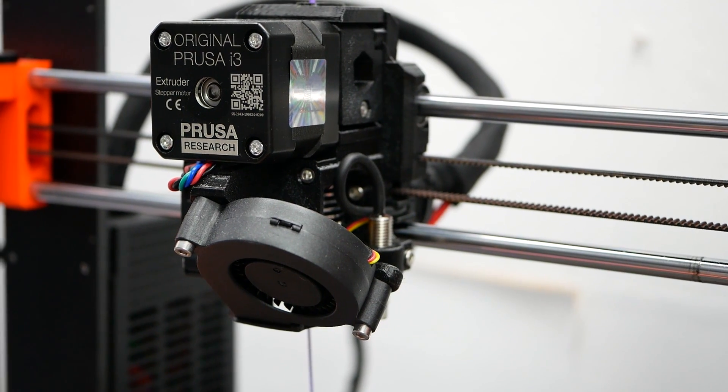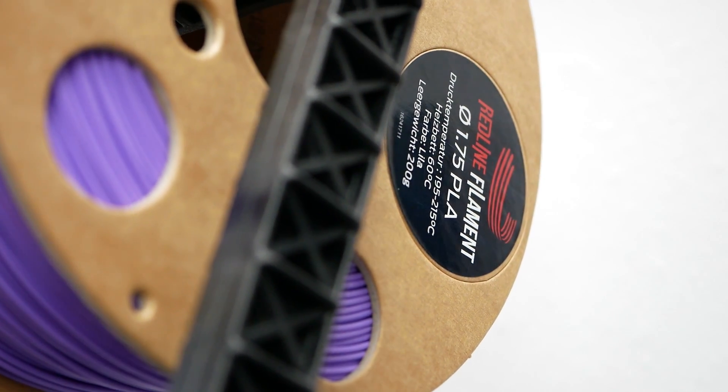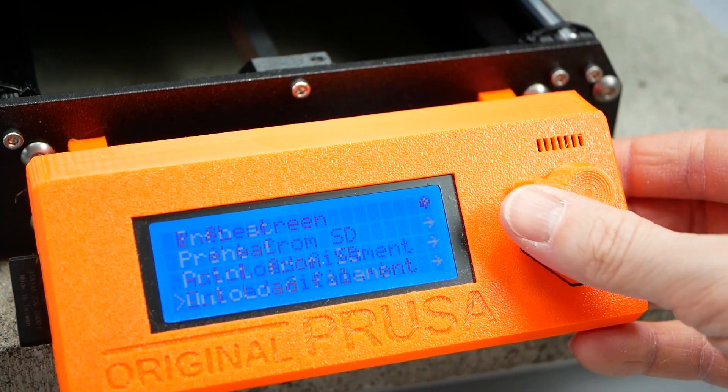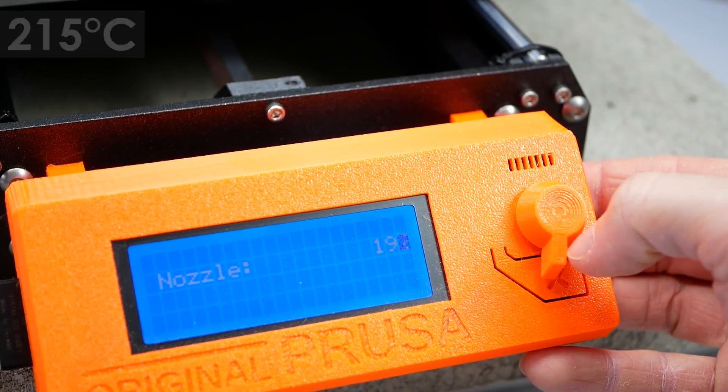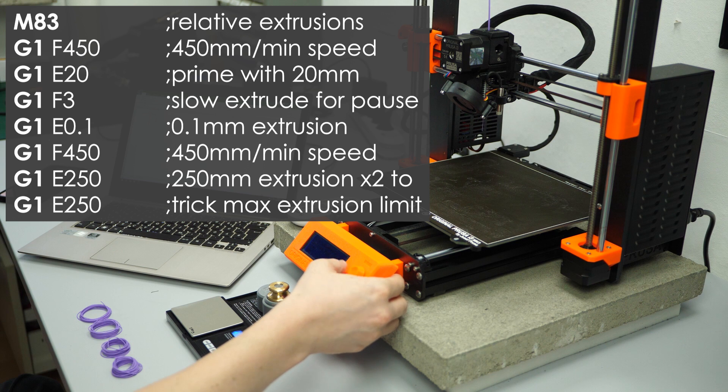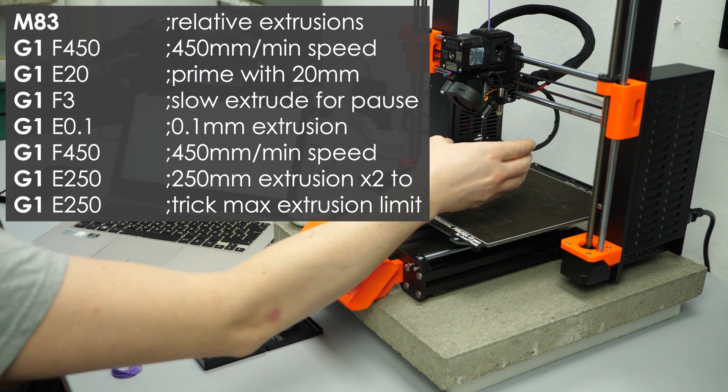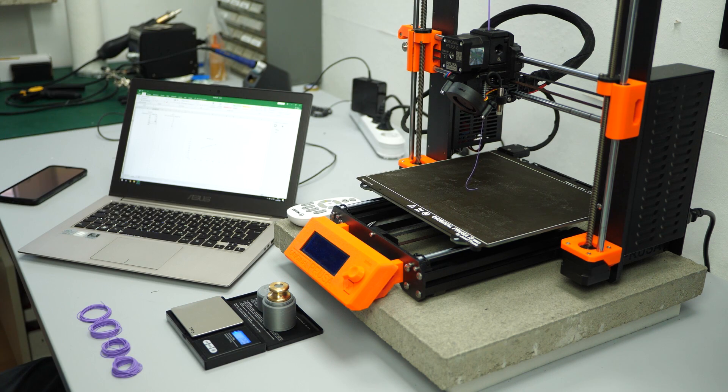After loading the filament into your printer, in my case I used purple PLA from Redline filament, you set it to the temperature you usually print at. For my PLA filament that is 215 degrees Celsius. I prepared a short G-code in which I first prime the nozzle with 20mm of filament, then pause a tiny amount of time in which I manually remove the string and continue extruding half a meter of filament at the set speed.